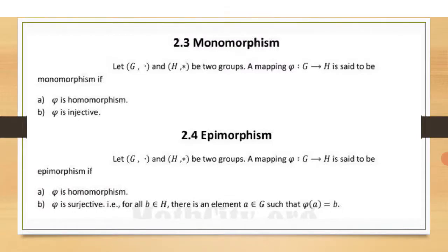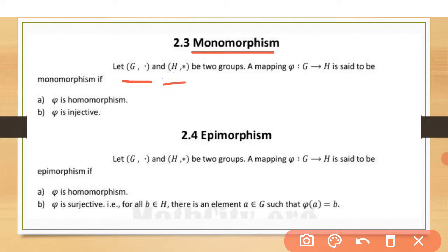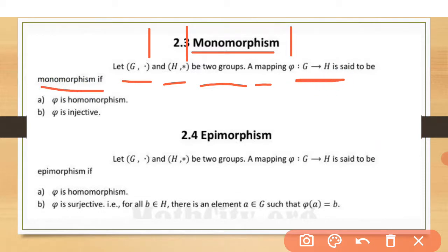First, what is monomorphism? Monomorphism is a mapping between two groups: G with operator dot and H with operator star. A mapping phi from G to H is said to be monomorphism if there are two conditions.